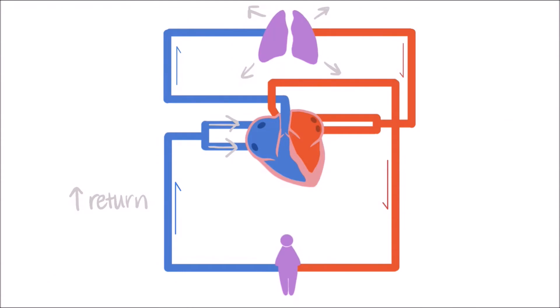At the same time, inspiration can decrease the amount of blood returning to the left atrium from the pulmonary circuit. As the lungs expand, there is less pressure on the pulmonary vasculature and more blood is retained. This causes a decrease in blood returning to the heart from the pulmonary circuit.